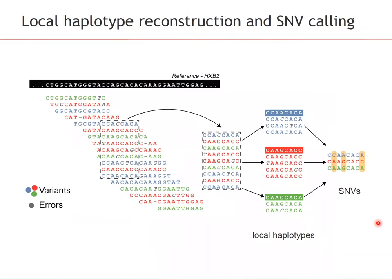The core of the pipeline is reconstructing genetic diversity. The first key idea is local haplotype reconstruction. Here we have the reference sequence shown on top and all aligned reads shown schematically. They come from three different variants in this example and have a number of sequencing errors. Local haplotype reconstruction refers to defining a window over the multiple read alignment and identifying the different variants — the local haplotypes — within this window. This boils down essentially to a clustering problem.